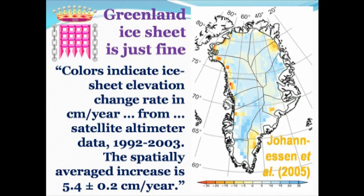The spatially averaged increase in the thickness of the ice is 5.4 plus or minus 0.2 centimetres per year. So over 11 years, in total, something like 55 centimetres — which is nearly two feet of extra ice on average — was laid down across the whole of the Greenland ice sheet. At a time when we've been told the whole Greenland ice sheet is disintegrating, there has in fact been this massive accumulation.